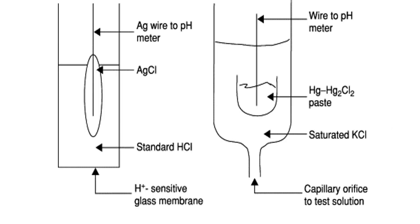A pH meter consists of two electrodes: a measuring electrode and a reference electrode. The measuring electrode has a tip at the bottom with a membrane through which hydrogen ions penetrate. It consists of a silver rod with a silver chloride paste, immersed in a standard HCl solution. The reference electrode consists of a mercurous chloride paste immersed in a saturated potassium chloride solution. It is sensitive to hydrogen ions, and when they come in contact, a potential difference is created.